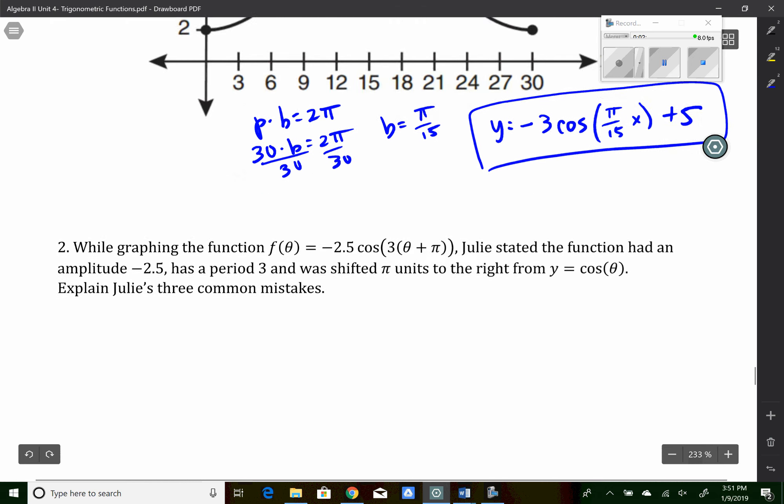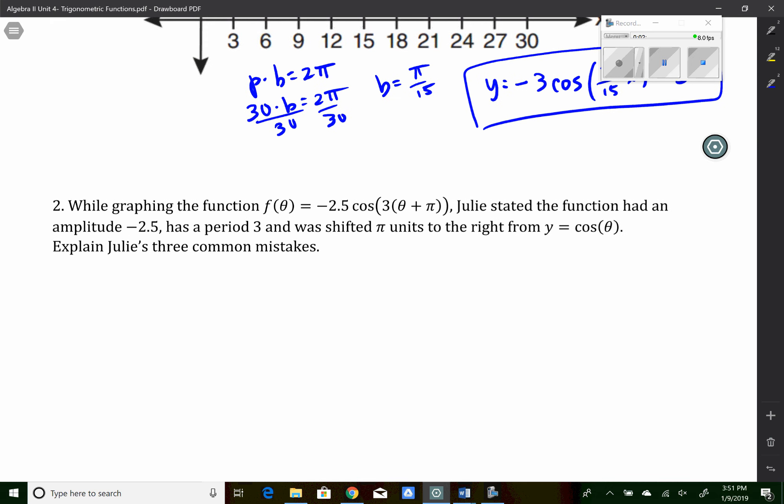Number two says, while graphing the function f of theta equals negative 2.5 cosine of 3 times theta plus pi, Julie stated that the function had an amplitude of negative 2.5, has a period of 3, and was shifted pi units to the right from y equals cosine of theta. Explain Julie's three common mistakes.